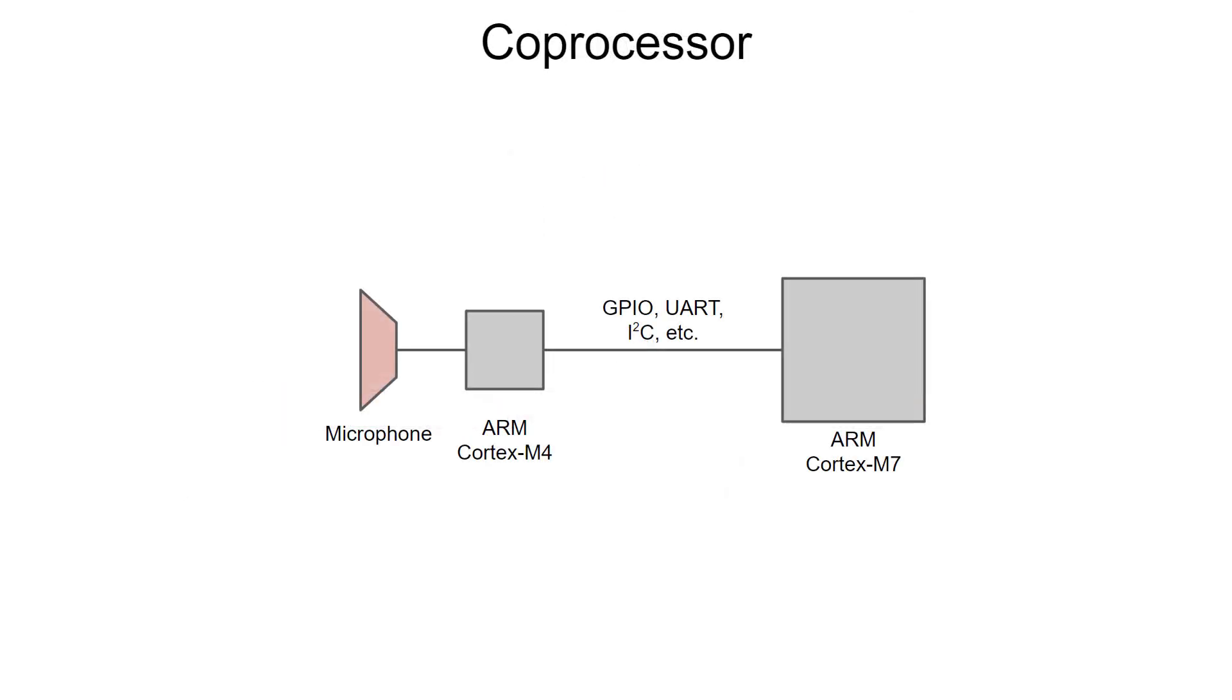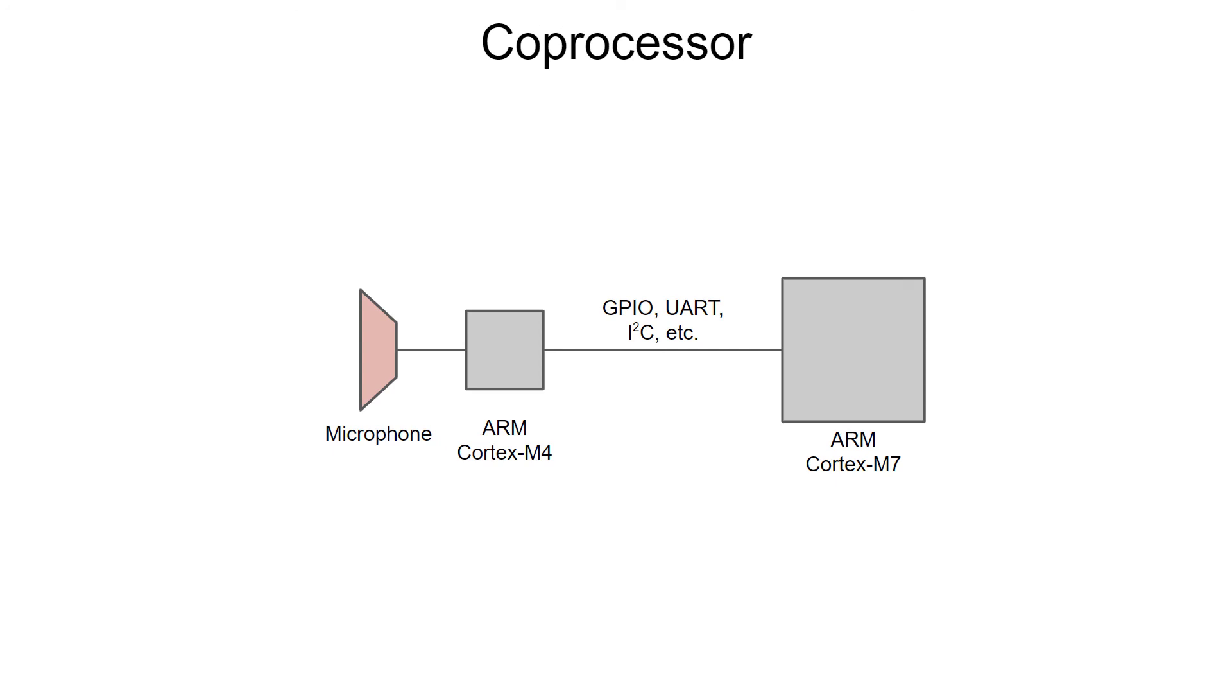Finally, something else you might consider is having a separate microcontroller just for running your machine learning application. For example, we could have a smaller microcontroller like an ARM Cortex-M4 connected to our microphone or other sensor. This microcontroller would be in charge of just reading the sensor and performing inference. Then it could notify our main microcontroller that an event has occurred by toggling a pin or by sending a serial or I squared C message.